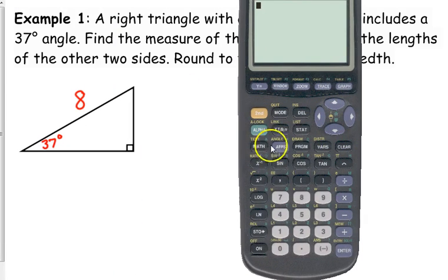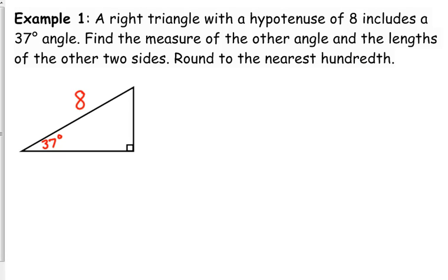90 minus the 37. Okay, or if you want to look at it as the whole triangle, the whole triangle is 180 degrees. We know we have a 90 degree angle, we have a 37 degree angle. We're left with 53. You can skip a step by doing 90 minus because 180 minus 90 is 90. Okay, so we have our two angles.